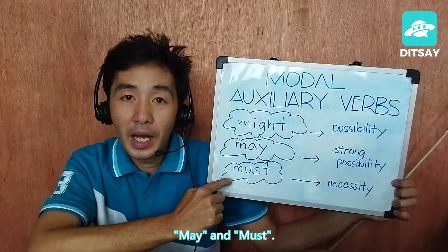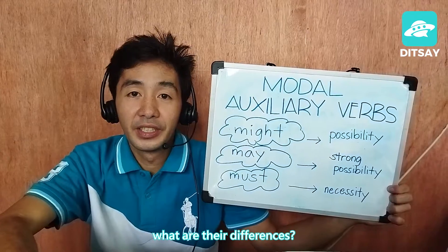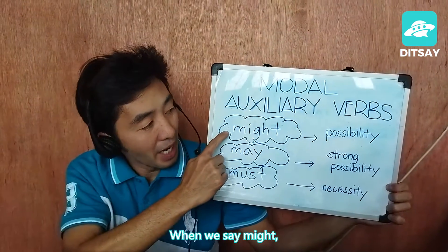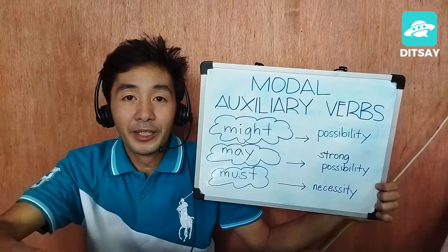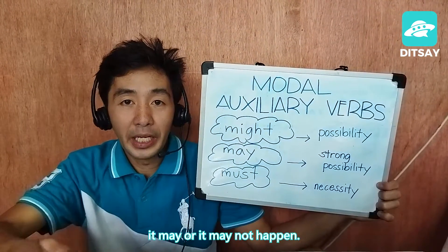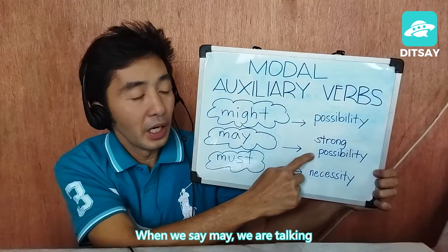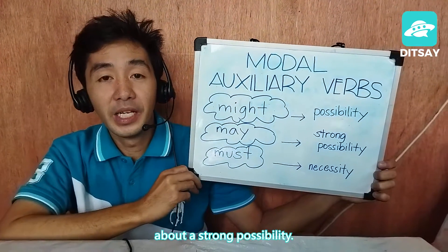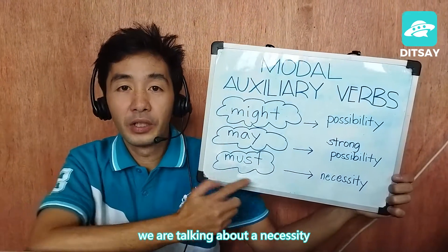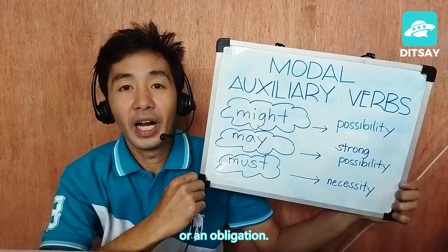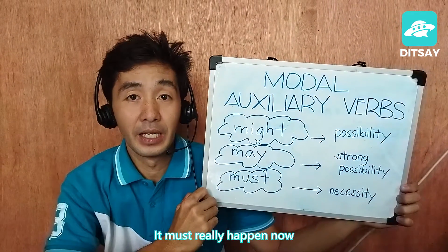The question is: what are their differences? When we say might, we are talking about possibility — it may or it may not happen. When we say may, we are talking about a strong possibility. And when we say must, we are talking about a necessity or an obligation — it must really happen.